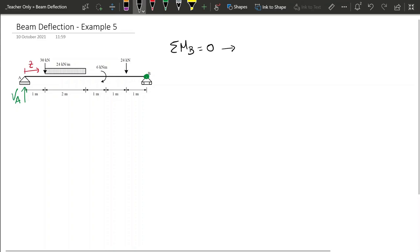From this equation we can get that VA times 6 minus 30 times 5 minus 24 times 2 times 4 plus 6 and then minus 24 times 1 must be equal to zero.